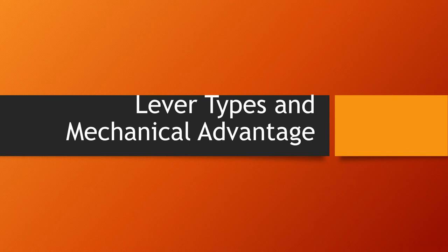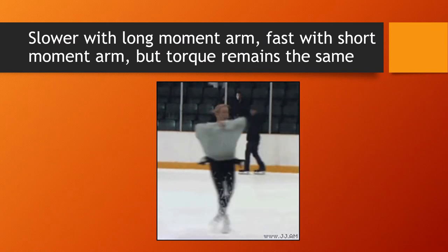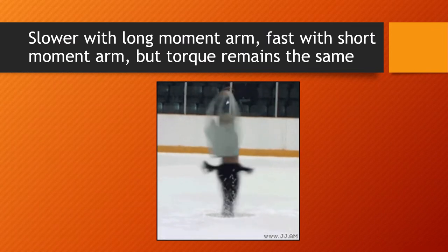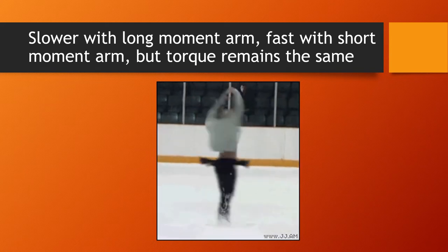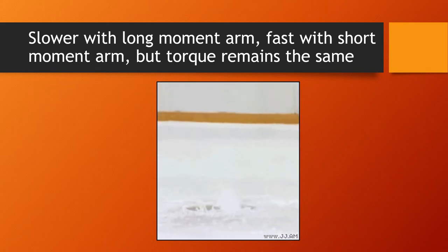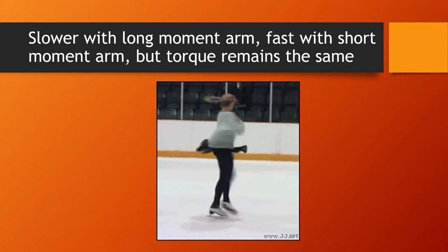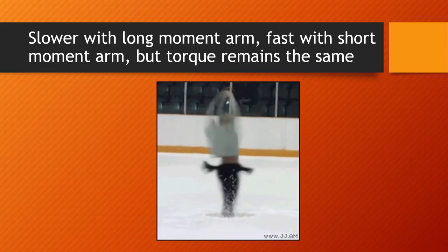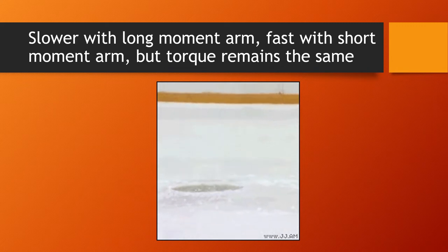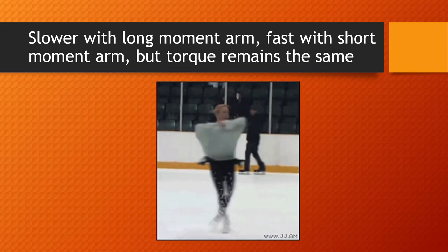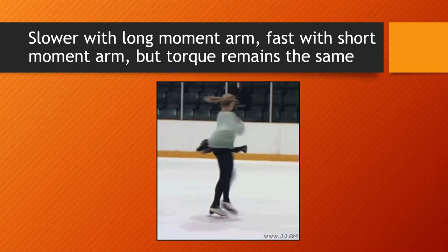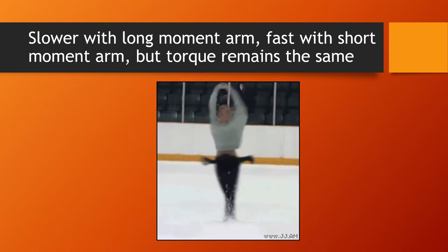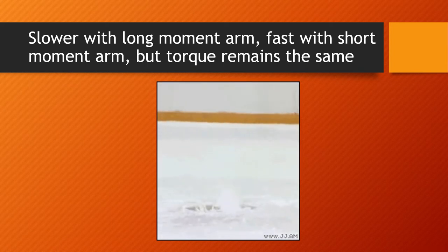Now we're going to talk about lever types and mechanical language. You may have noticed, if you look at somebody spinning like a figure skater, that that never actually happens. But what does happen is when their arms or legs are more horizontal, they're slower, and when they become more vertical, they're faster. The torque is the same either way. What they do when they extend their arms or legs out more horizontally is give inertia a greater moment arm.